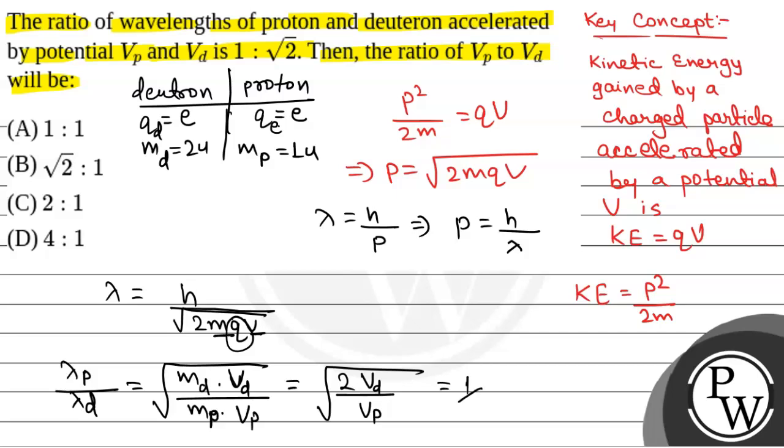So, from here we will squaring both the sides. VD upon VP that will be equal to 1 by 4. So, VD upon VP is 1 by 4, or VP upon VD is 4 is to 1. That is option D.